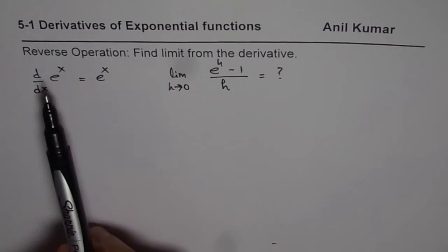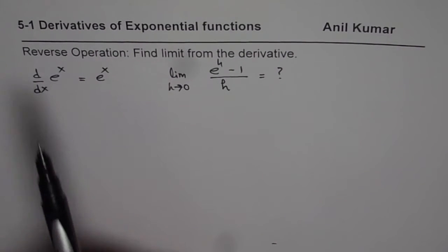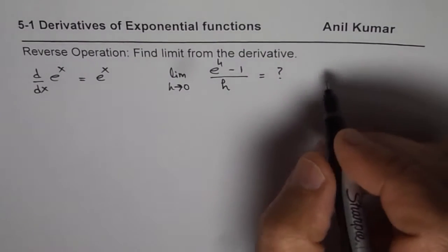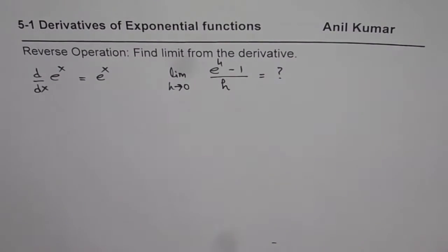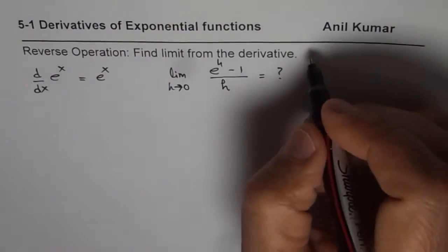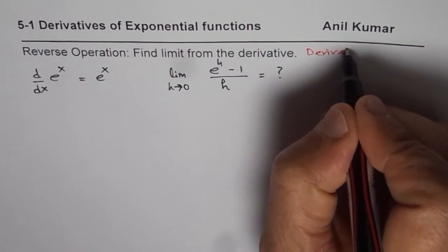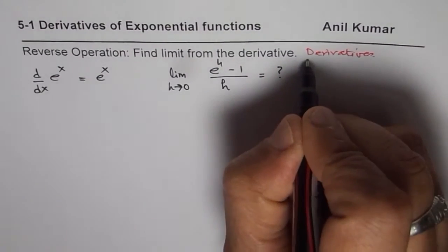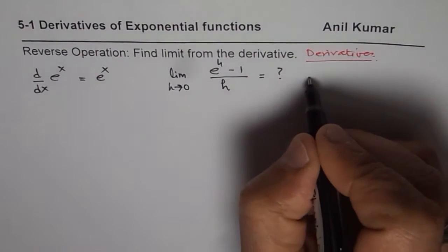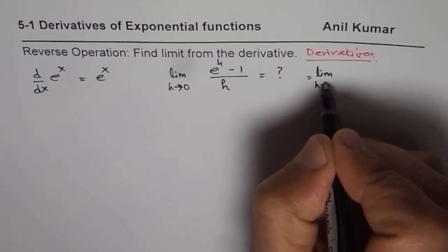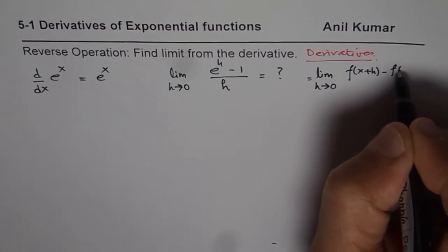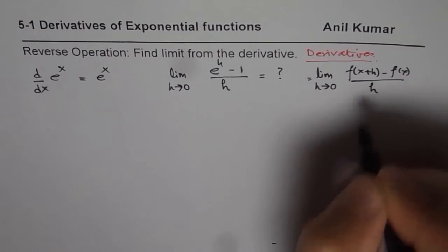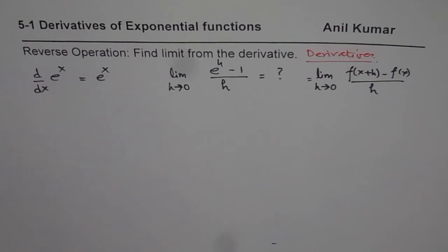Let us explore this definition. Whenever we say derivative of a function, we know the derivative can be written in the form of limits. The derivative of any function is defined as the limit as h approaches 0 of f of x plus h minus f of x over h. That is the definition which will help us get the result.